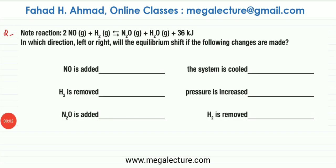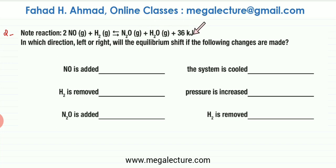Now let's do the second question on the worksheet. The reaction is 2NO + H2 in equilibrium with N2O gas + H2O gas, and it's an endothermic reaction in the forward direction. They're asking in which direction — left or right — the equilibrium will shift if the following changes are made.